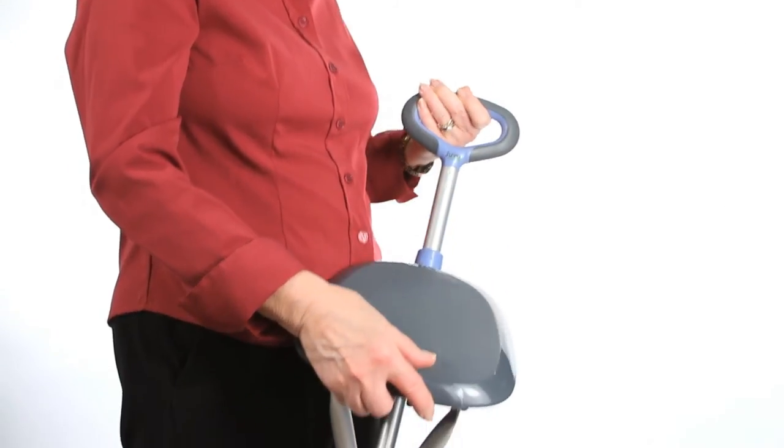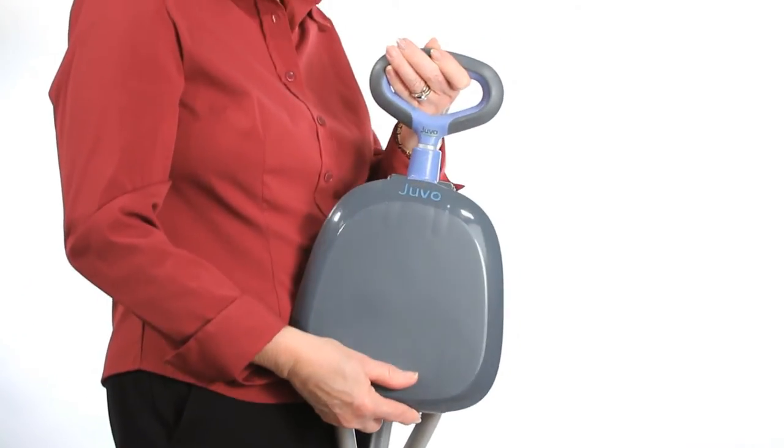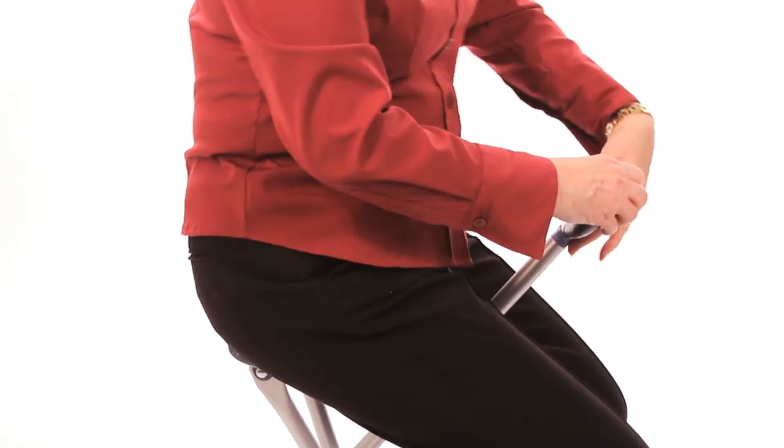While lightweight, the Juvo Travel Seat and cane is very sturdy, accommodating up to a maximum of 250 pounds of weight.